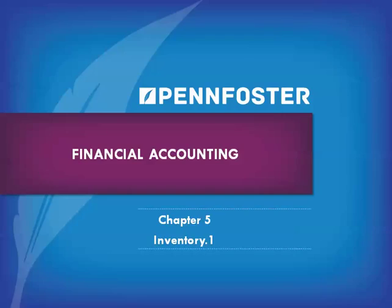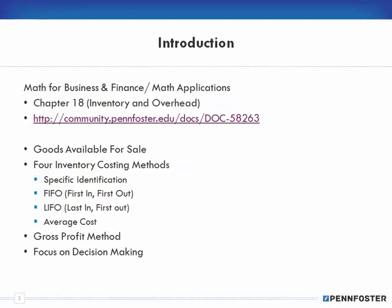On this introductory slide, most students who are in the business curriculum will have already taken Math for Business and Finance. In that textbook, chapter 18 was about inventory and overhead, and if you notice the title of this chapter is called inventory — so basically this chapter is a repetition of what was in that textbook. If you've had Math for Business and Finance, none of this stuff should be new to you.